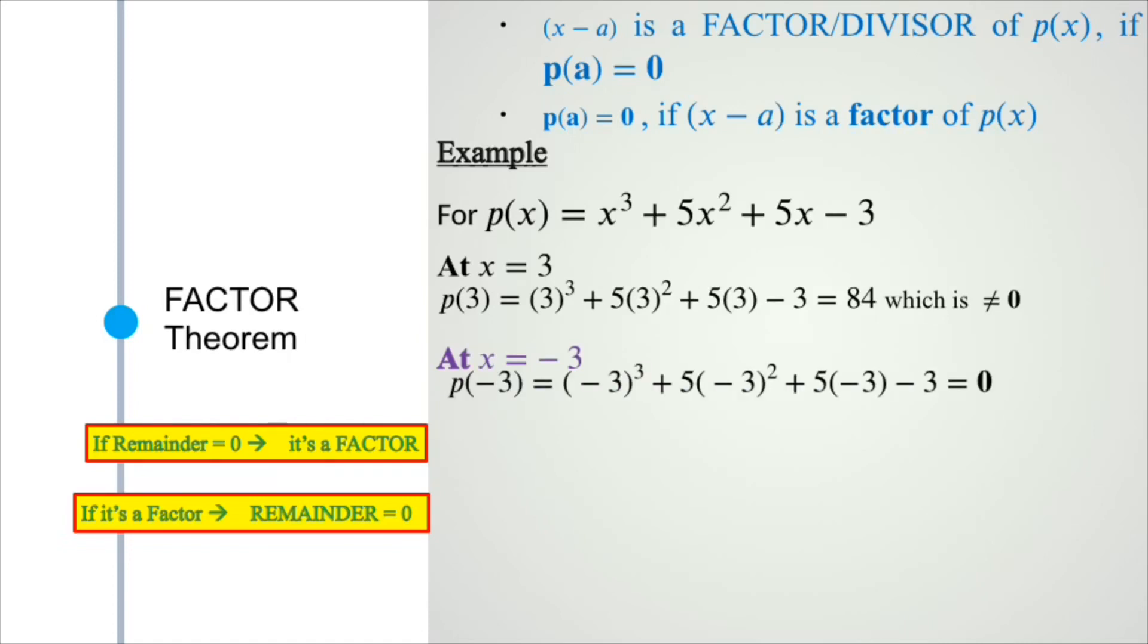Here, the remainder is zero at x equals three but not zero at x equals negative three. So x minus three is a factor but x plus three is not a factor of the polynomial.